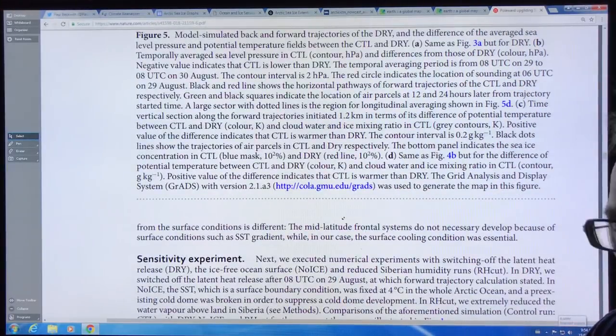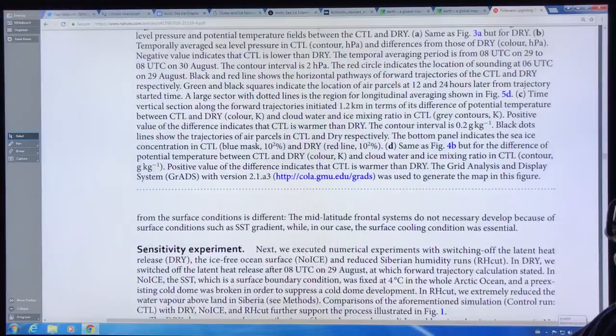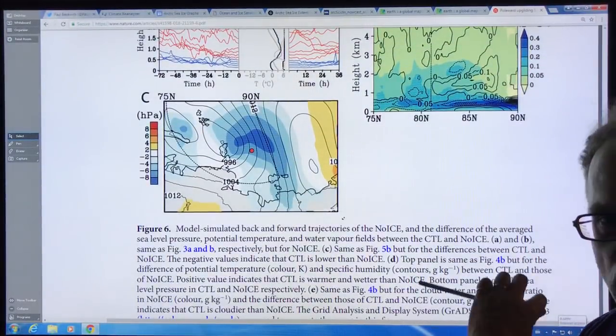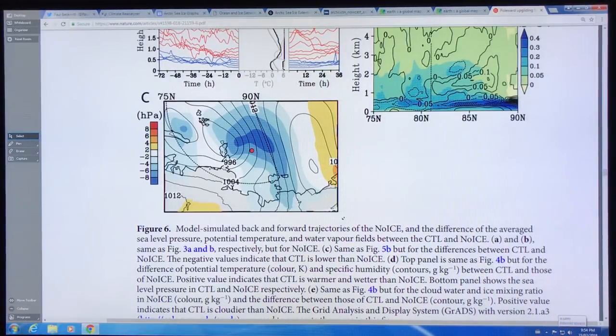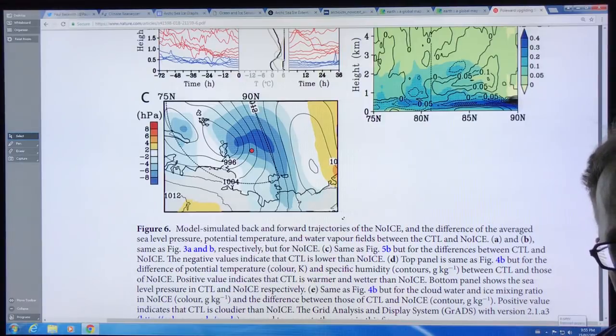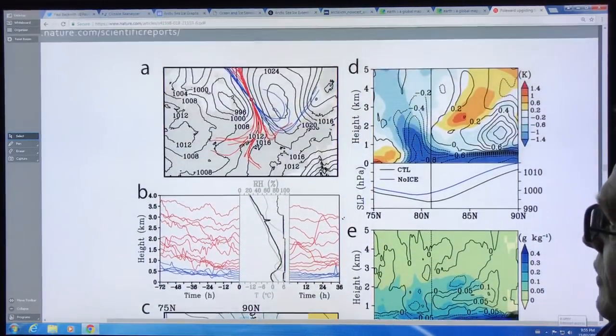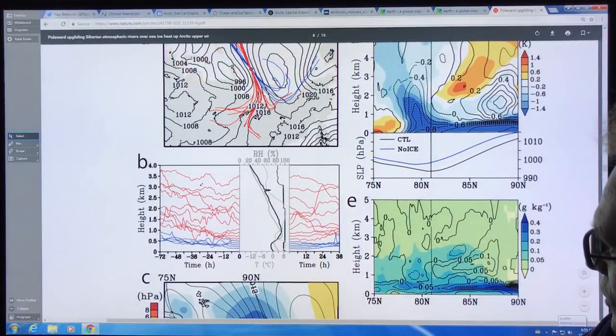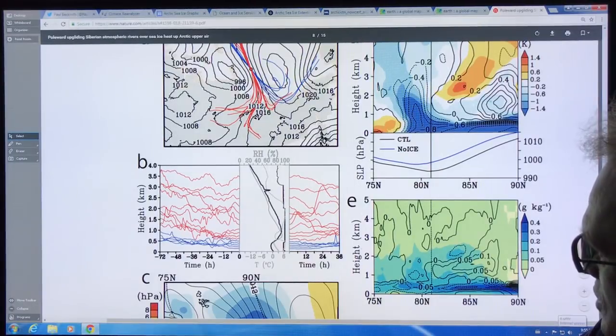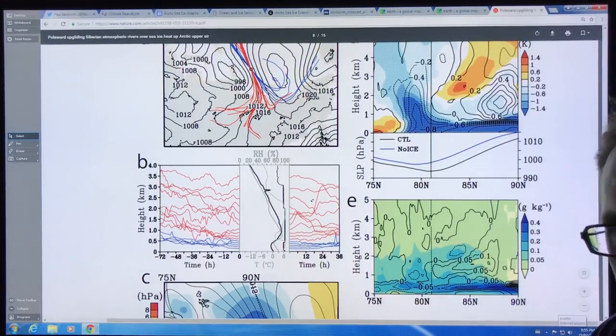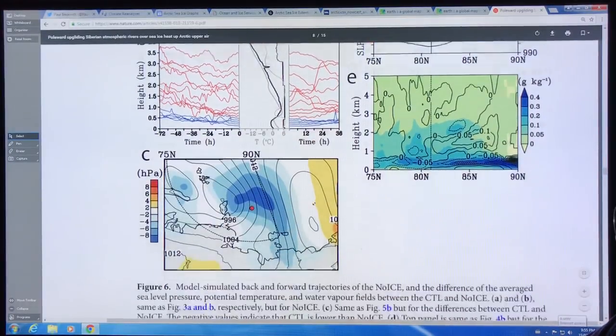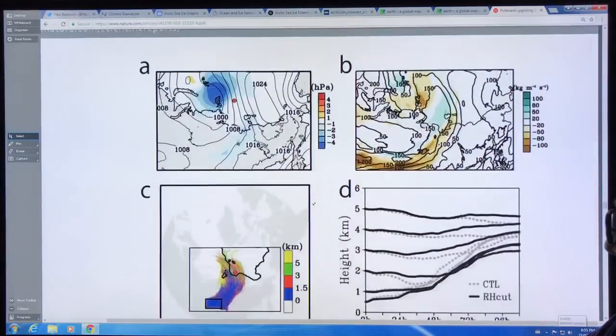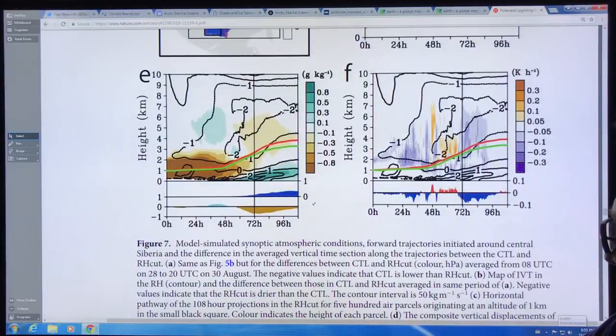What they did is a no-ice case. The model had no ice covering the Arctic. Therefore, you wouldn't have a dome of cold air over the ice because there's no ice. This is the trajectory from Siberia and from the Chukchi Sea. Again, you can see you don't see a rise, especially at these levels here. You don't see a rise. So you need the sea ice to do that.